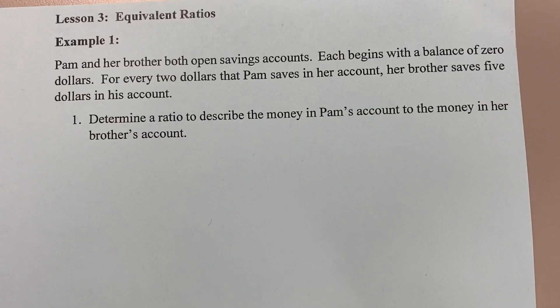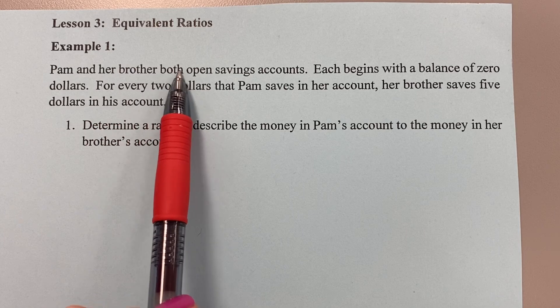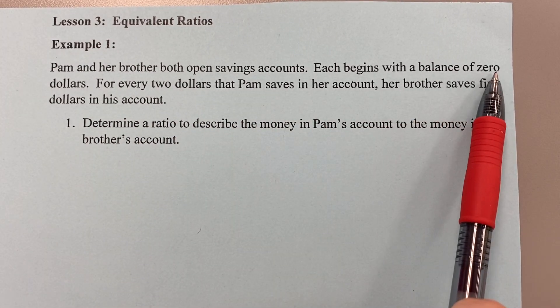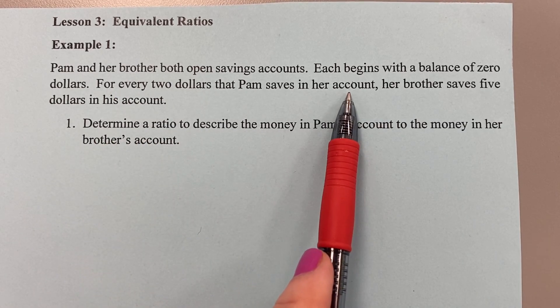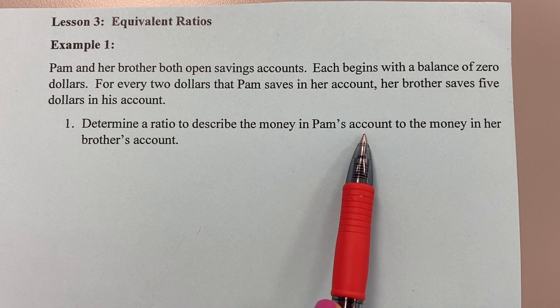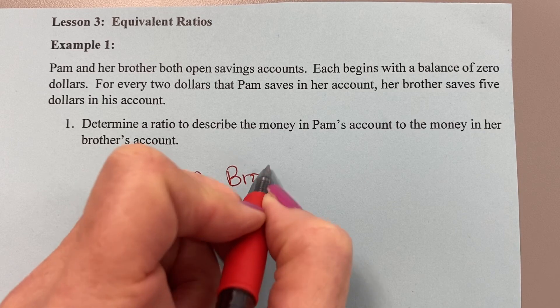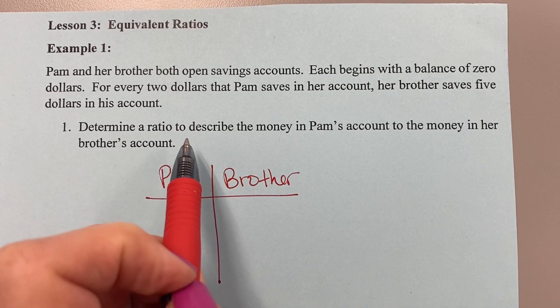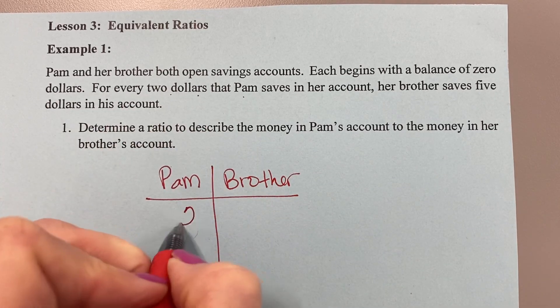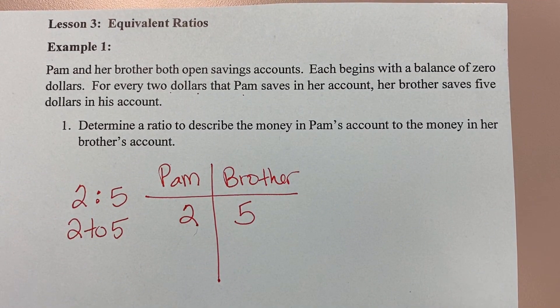Moving along. Now we're going to jump ahead in the packet to page eight. And we're looking at an example here. Now we're in lesson three. We were just in lesson two. We're hopping around. Let's read example one. Pam and her brother both open savings accounts. Each begins with a balance of zero dollars. For every two dollars that Pam saves in her account, her brother saves five dollars in his account. Determine a ratio to describe the money in Pam's account to the money in her brother's account. So I would probably say Pam and her brother, that ratio is for every two dollars Pam saves, her brother saves five dollars. So that ratio would be either 2 to 5 or 2 colon 5. Very good.